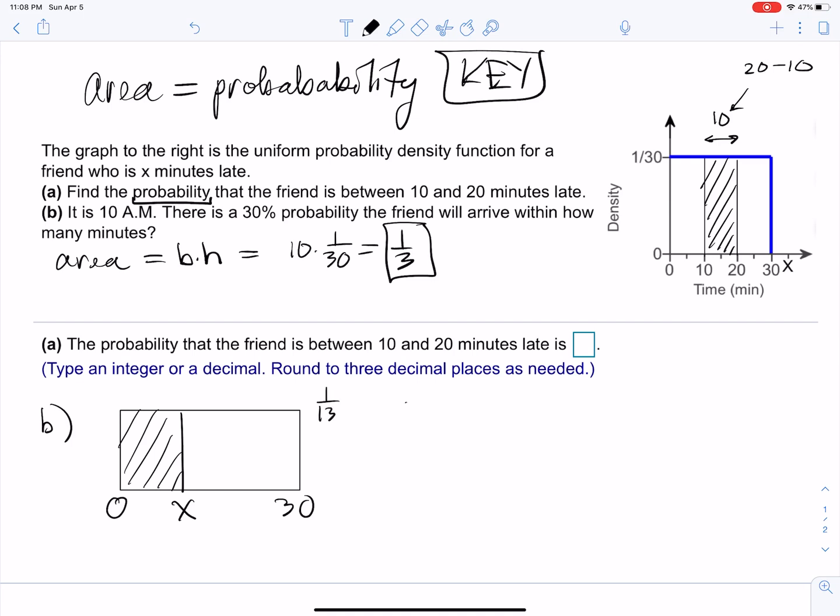So the area equals base times height. But in this case it's 30%, so 3 over 10. The base is x, because this distance here is x minus 0, which is just x. And the height is 1 over 30—sorry, it's 1 over 30, not 1 over 13.